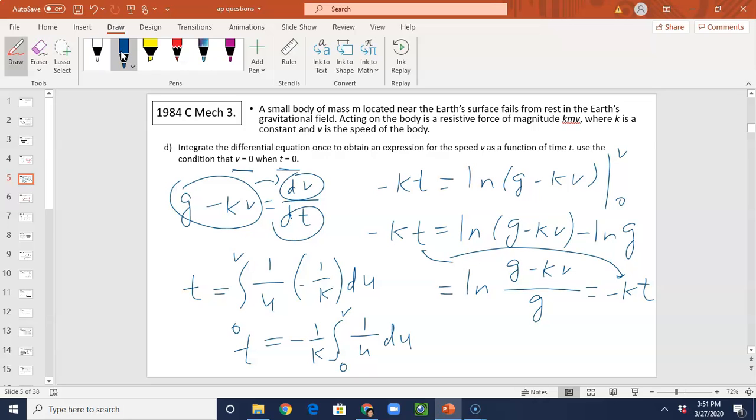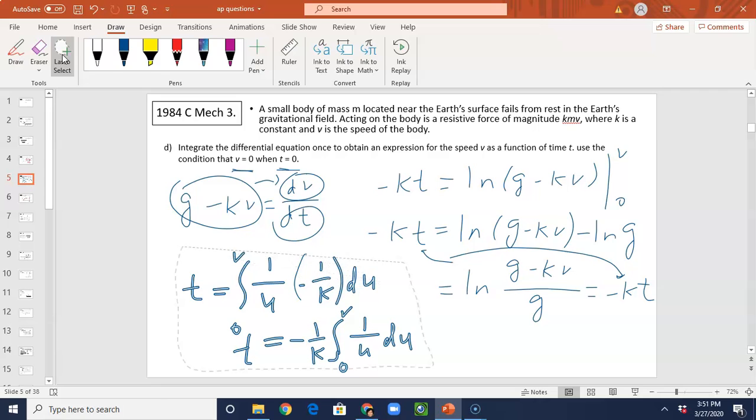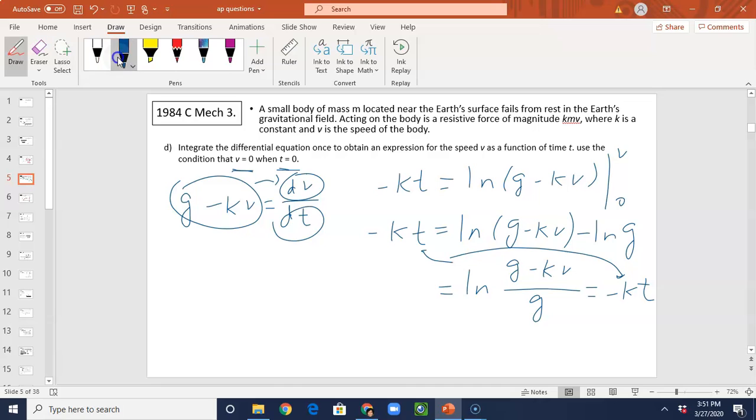So what does this give you? So this is LN. This is really E, right? So we have G minus KV divided by G equals to E negative KT. So you can solve for V here. G minus KV equals to G E negative KT.